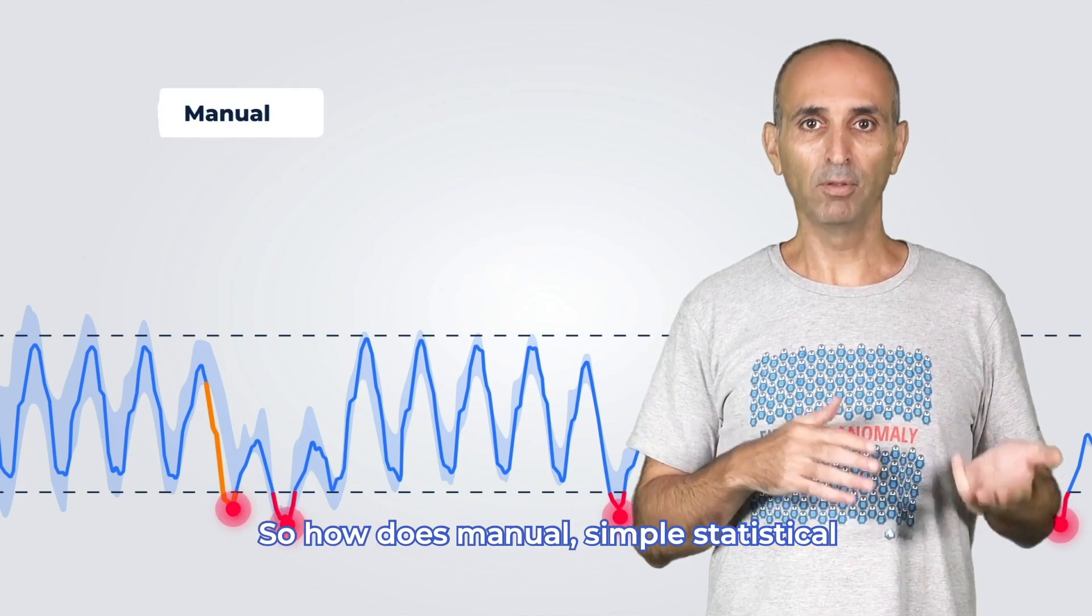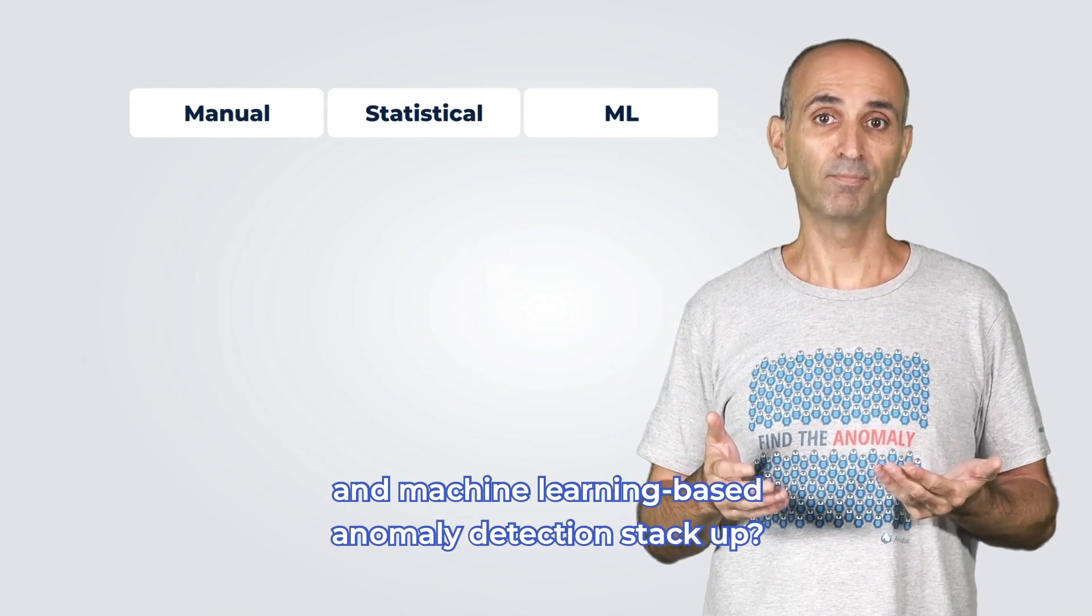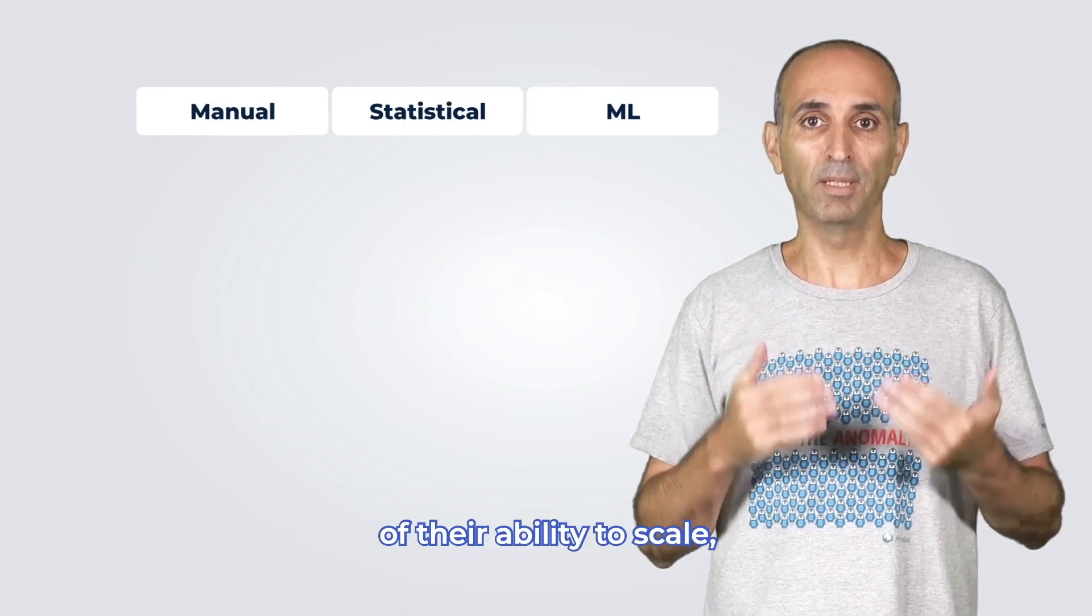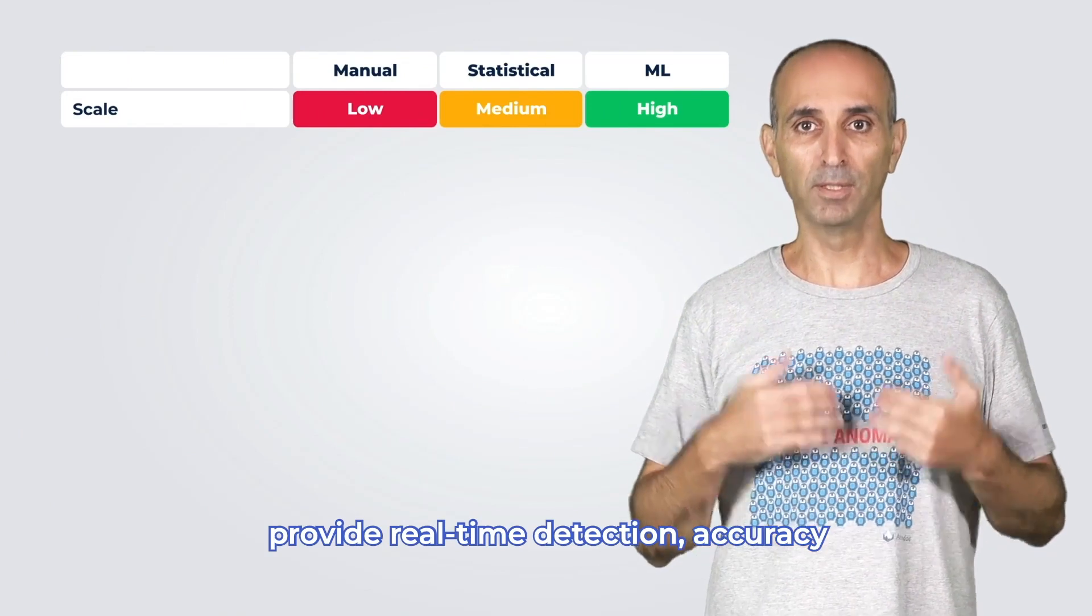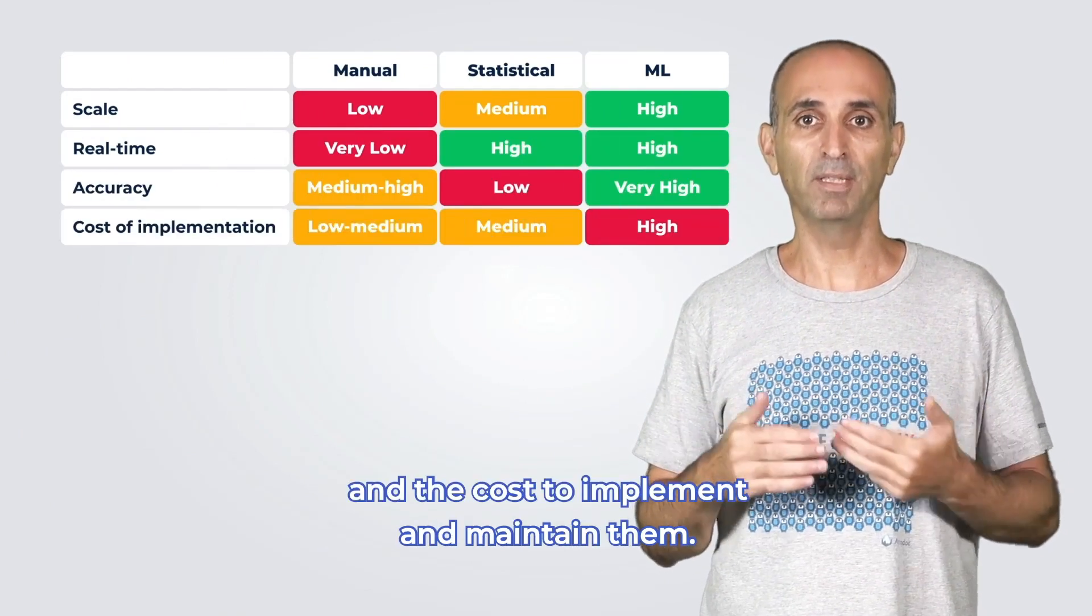So how does manual, simple statistical, and machine learning based anomaly detection stack up? Well, we measure them in terms of their ability to scale, provide real-time detection, accuracy, and the cost to implement and maintain them.